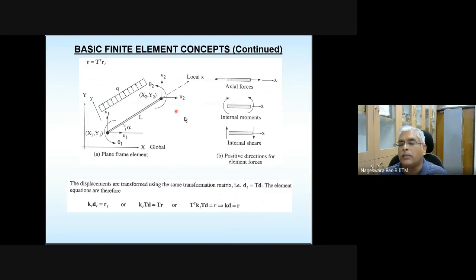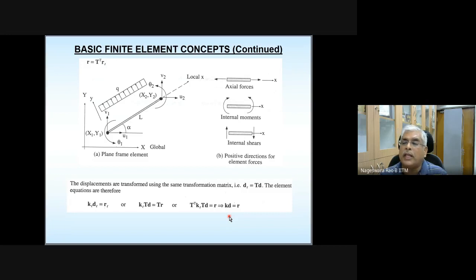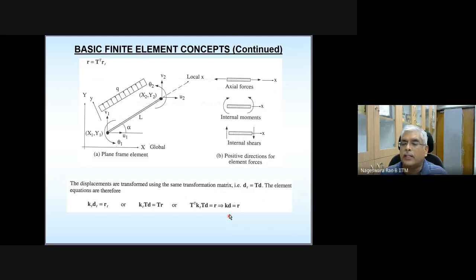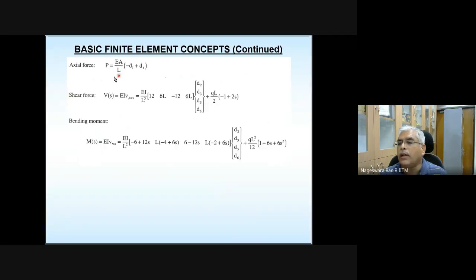Depending on the orientation of different elements, you assemble the element equations and build the global stiffness matrix by placing contributions from each element at appropriate locations. Then solve the reduced equation system for the unknowns. The unknowns — rotations, axial displacements, and transverse displacements — are in the global coordinate system, so you multiply back with the transformation matrix to get local degrees of freedom, from which you can determine axial force, shear force, and bending moment.